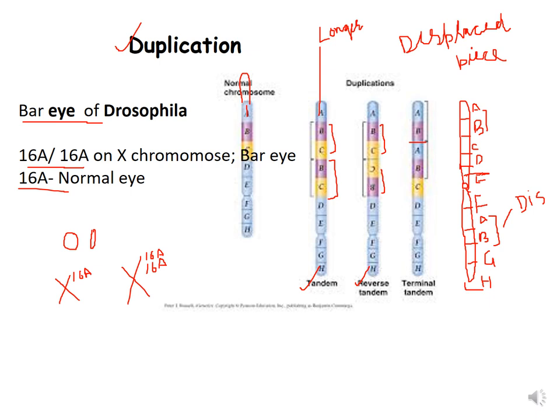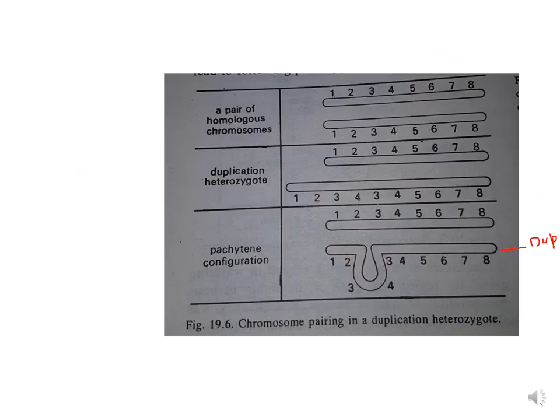In the normal case there is only one copy of the 16A gene, but in duplication there are two copies present. Because of this, the longer chromosome causes bar eye in Drosophila. This picture from P.K. Gupta shows duplication.